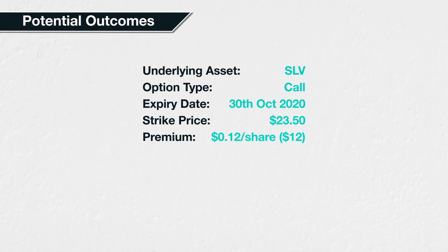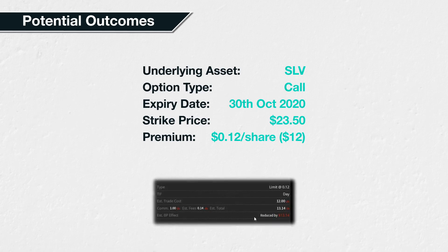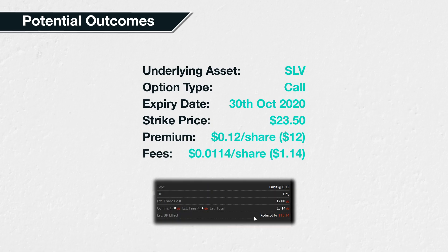The option price or premium is 12 cents per share. In theoretical examples we've ignored fees, but as this is a real-world example we'll include them. The total fees and commission for our order were $1.14. Since the contract multiplier for SLV is 100, each contract represents 100 shares. This $1.14 total fee equates to $0.0114 per share — just over one cent — which we add to the premium per share to give us the total cost per share.